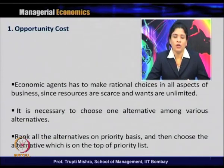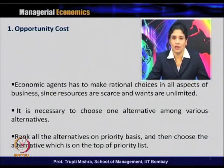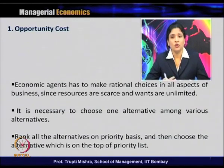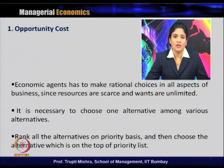How does opportunity cost come into picture? In the last class we discussed that there is always a gap between wants and the resources available to satisfy them. Since there is a gap, all economic agents — whether a consumer, a producer, an investor, or the economy as a whole — have to make rational choices, simply because resources are scarce and wants are unlimited.